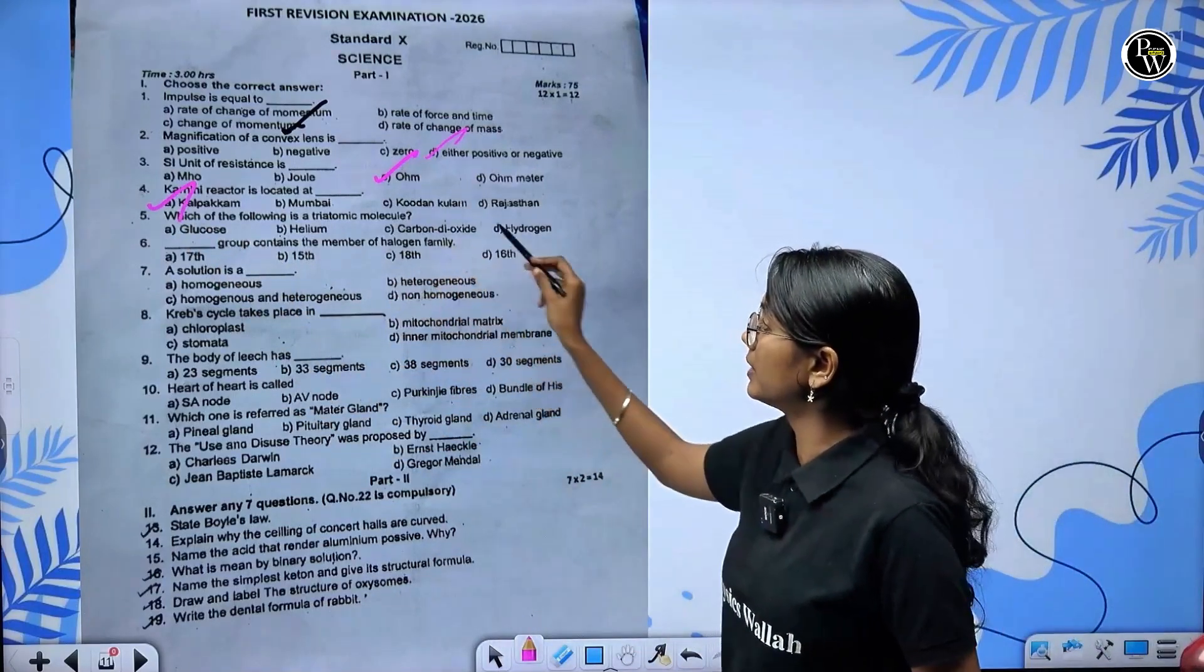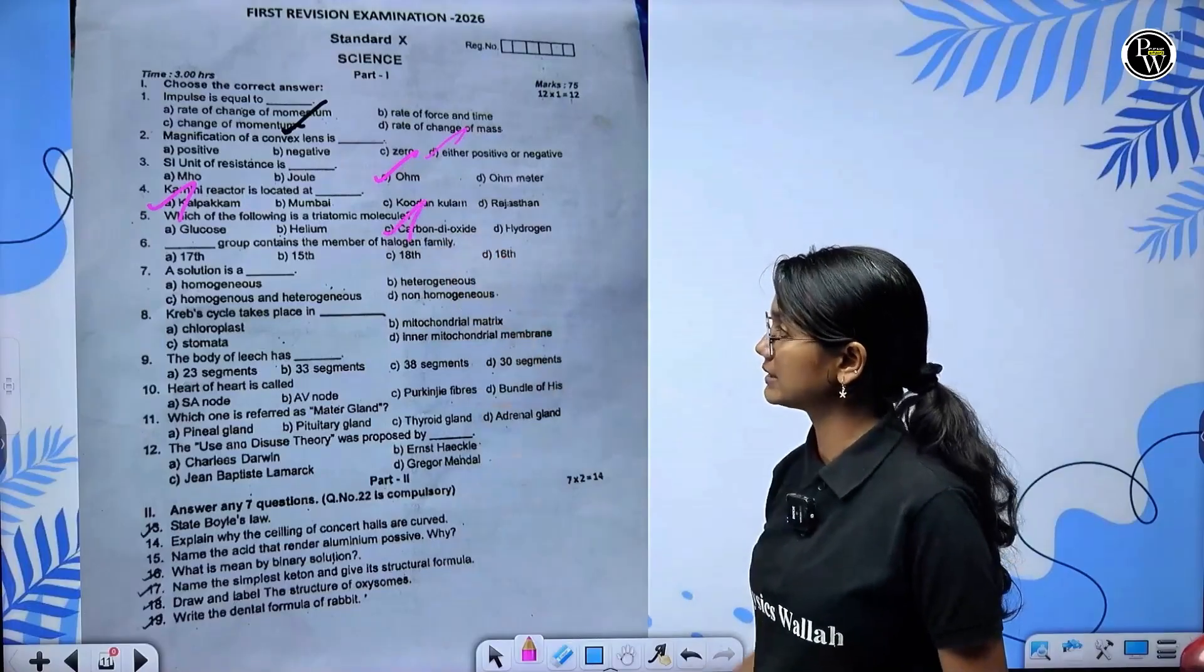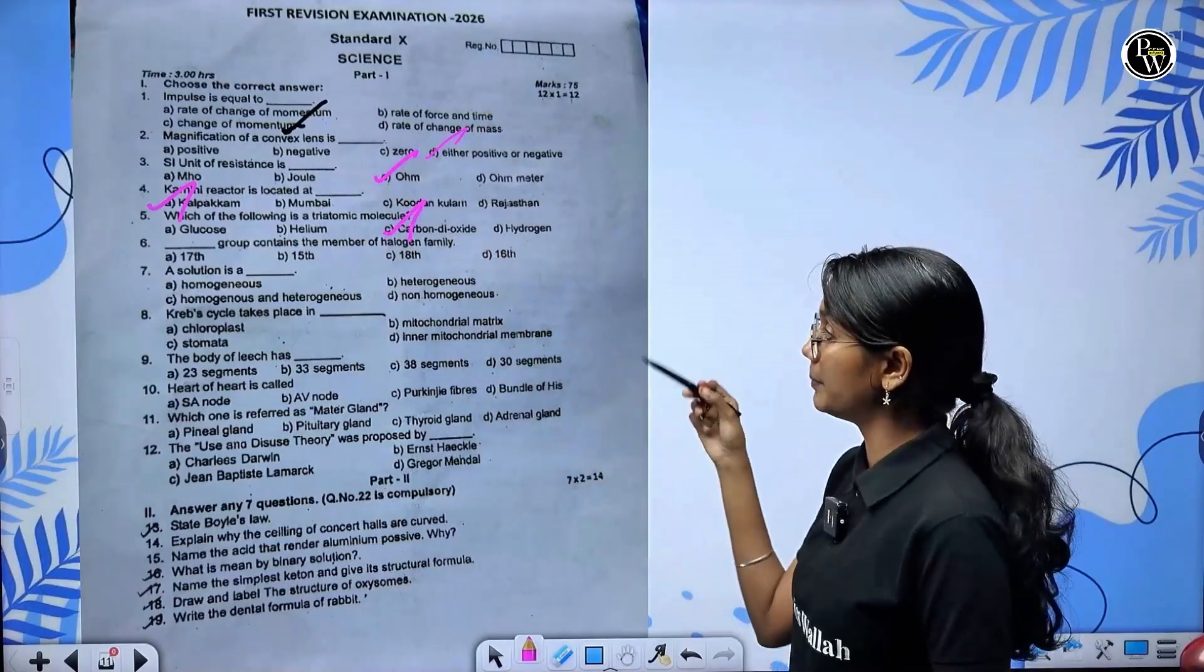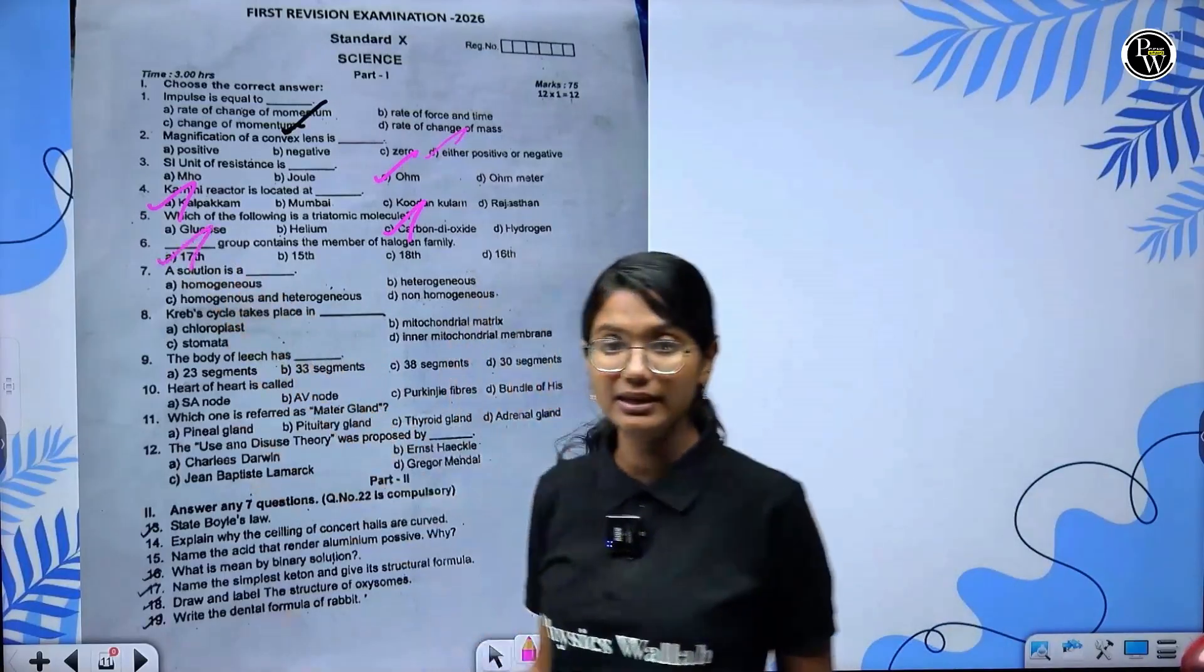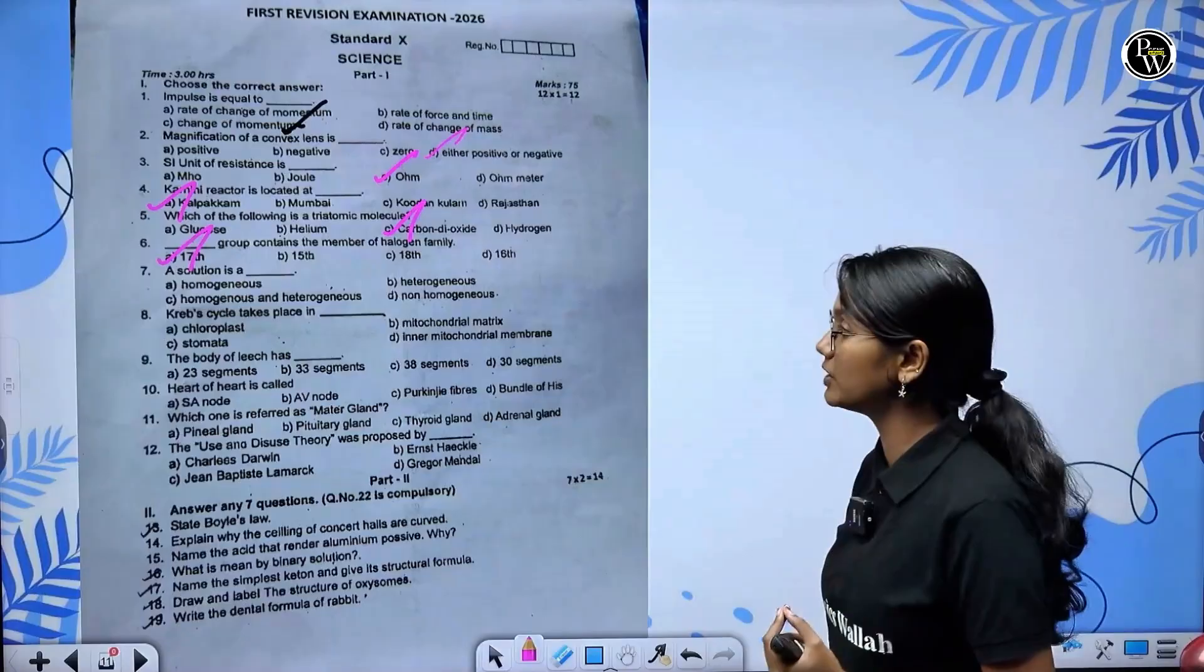Which of the following is a triatomic molecule - glucose, helium, carbon dioxide, hydrogen? Carbon dioxide. Group contains a member of halogen family - 17th group. A solution is a homogeneous mixture.